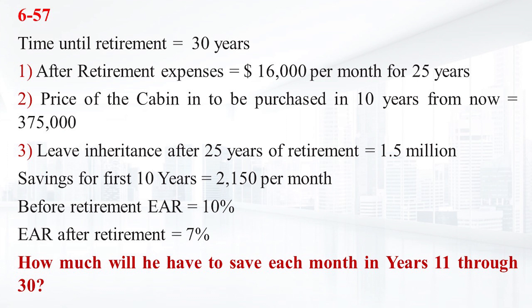with the first payment received 30 years and one month from now. Second, he would like to purchase a cabin in Rivendell in 10 years at an estimated cost of $375,000. Third, after he passes on at the end of 25 years of withdrawals, he would like to leave an inheritance of $1.5 million to his nephew Frodo. He can afford to save $2,150 per month for the next 10 years.